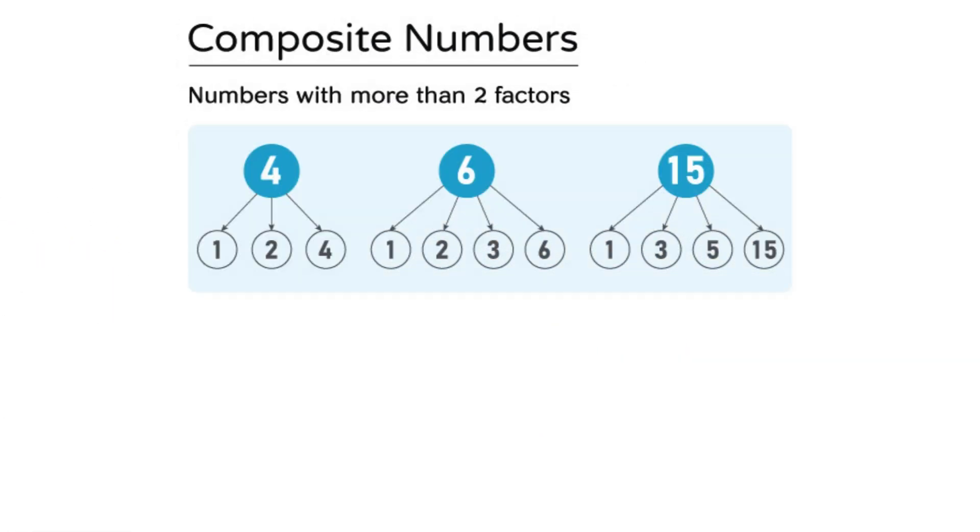A composite number is a positive whole number with more than two factors. 8 is a composite number because its factors are 1, 2, 4, and 8.